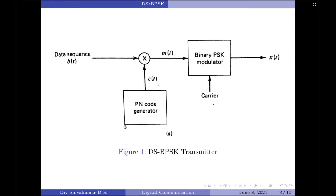The transmitter of the DSBPSK is shown in figure 1 here. As you can see, it involves two stages of modulation. The first stage consists of a product modulator or a multiplier with the data sequence and the PN sequence as inputs. The second stage consists of a binary phase shift keying modulator.